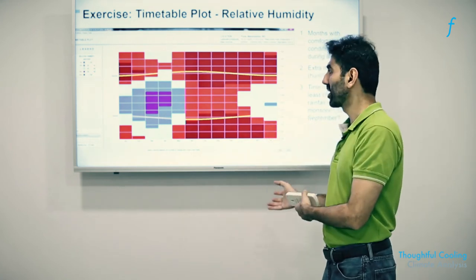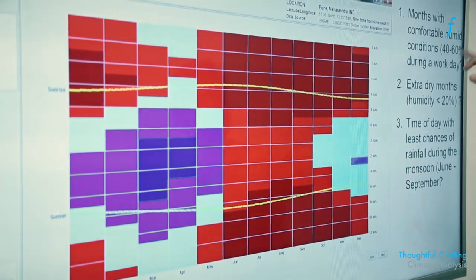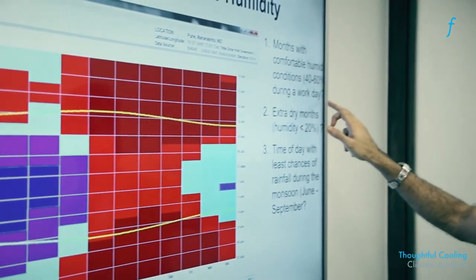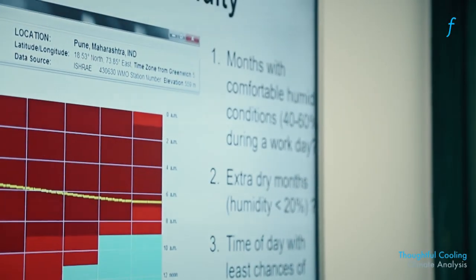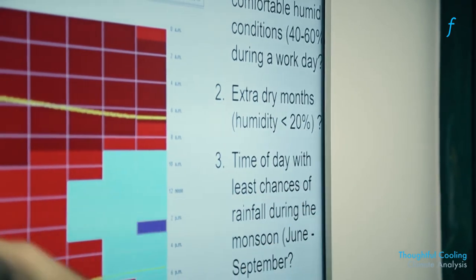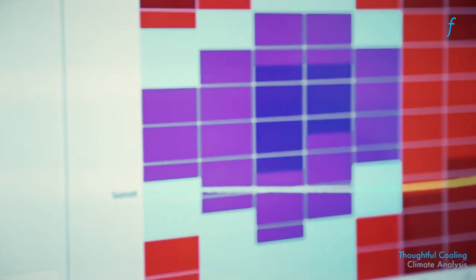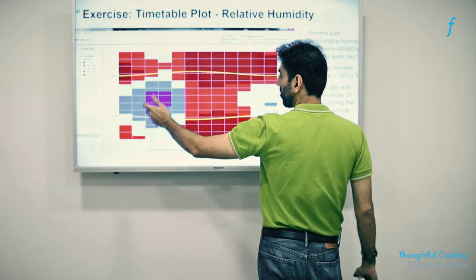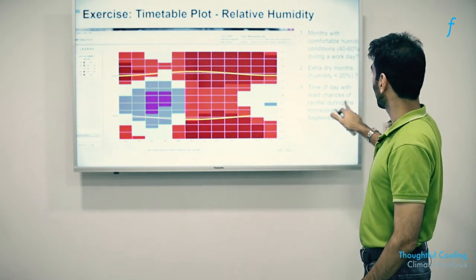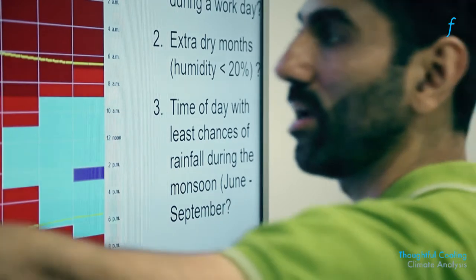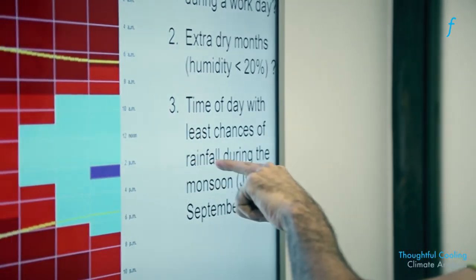So for example, the question here is: months with comfortable humidity conditions, which is 40 to 60 percent during a work day. What is the answer for this? We will get to know. Extra dry months—where is the humidity very low? Here low humidity is indicated by darker blue colors. So we can see that the relatively dry months are in February, March, April. The time of the day with least chances of rainfall, which means very high humidity—the times of the day when you have least chance of rainfall during the monsoon would again be the very dry parts of June to September.